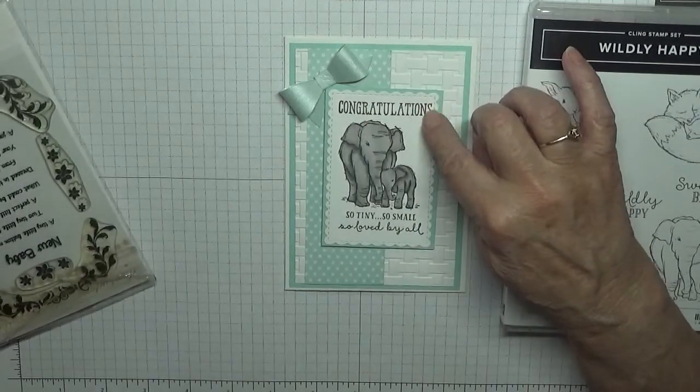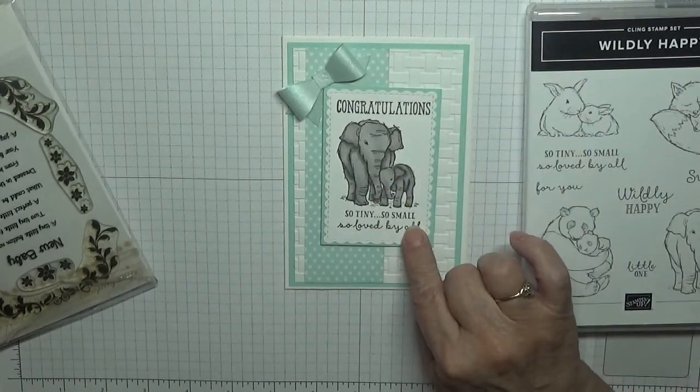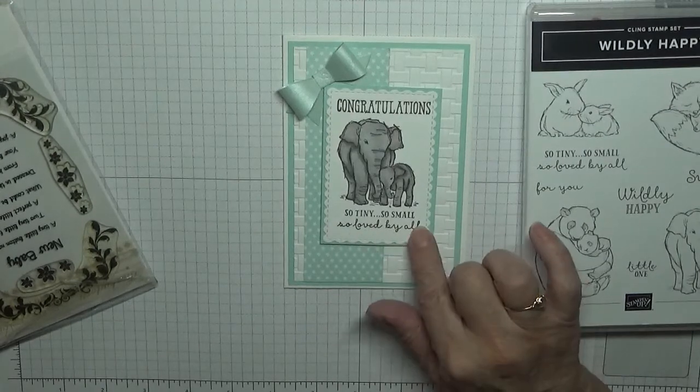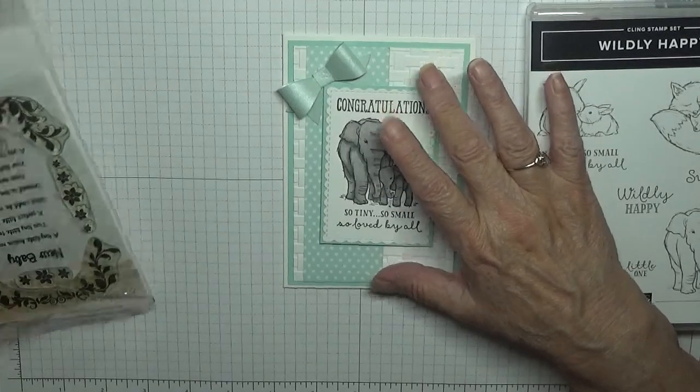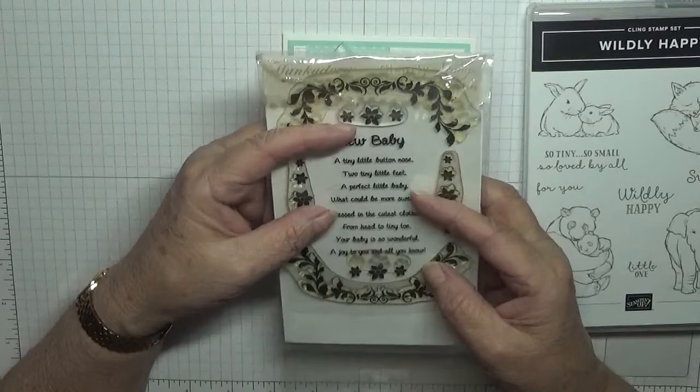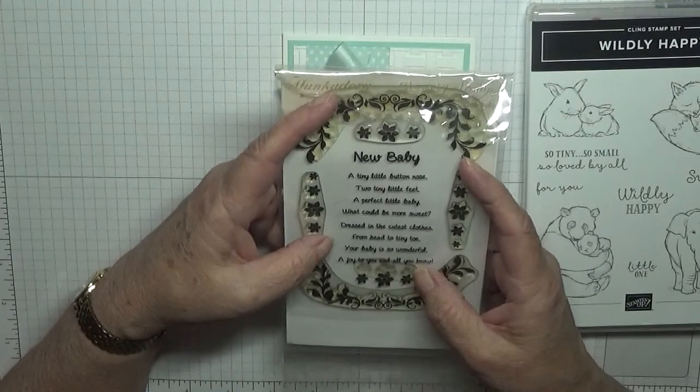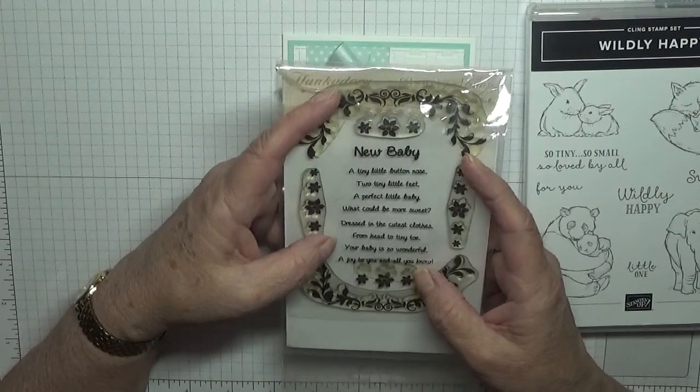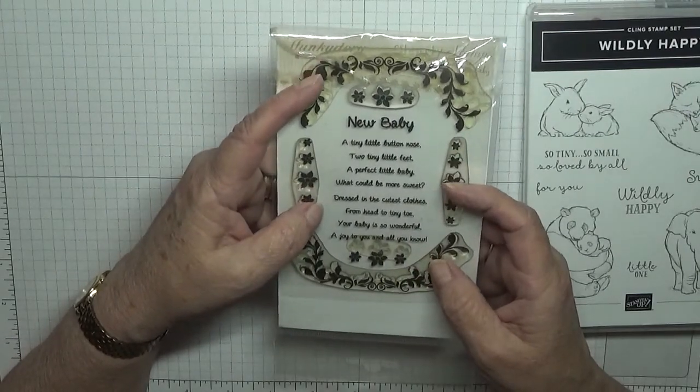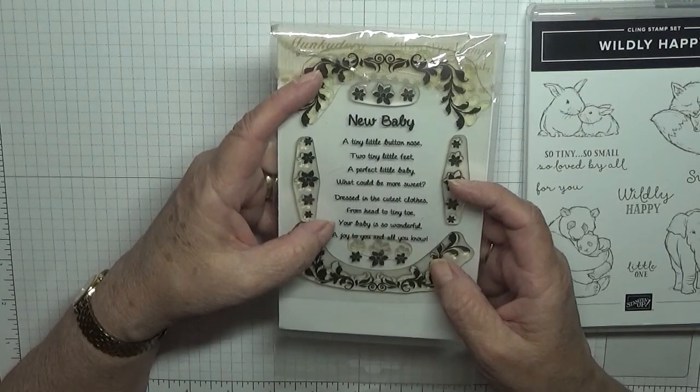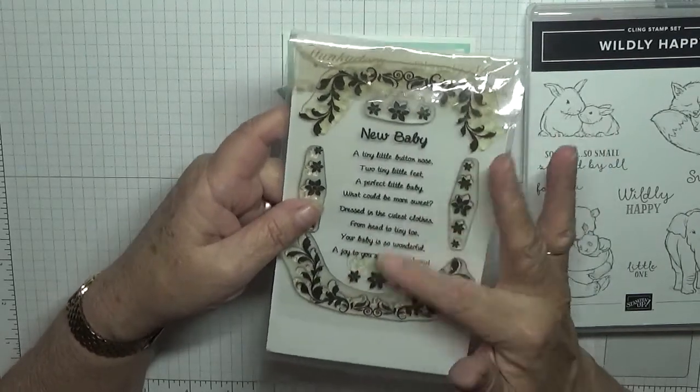I used the elephants and Sweetest Baby on the inside. For the front I'm going to change it a little bit. I'm not going to put congratulations, that can go on the inside. I am going to put New Baby but I'm leaving So Tiny, So Small, So Loved By All as well on it. The sentiment that's going inside has come from this Hunkydory set New Baby I've had it absolutely ages, and the little poem is stamped on the inside.